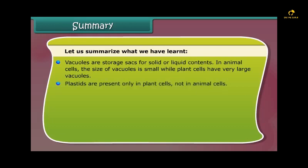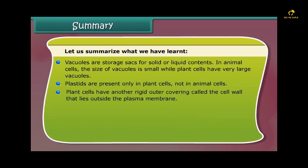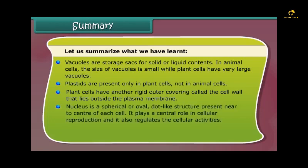Plastids are present only in plant cells, not in animal cells. Plant cells have another rigid outer covering called the cell wall that lies outside the plasma membrane. The plant cell wall is mainly composed of cellulose and provides strength to the cell.